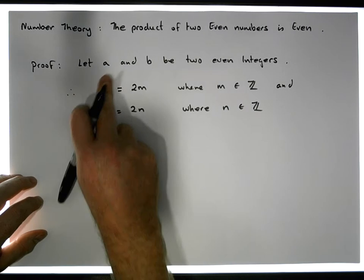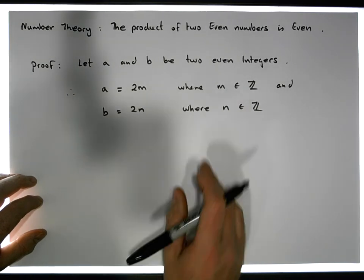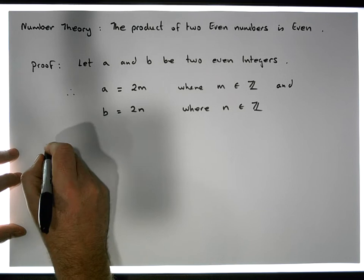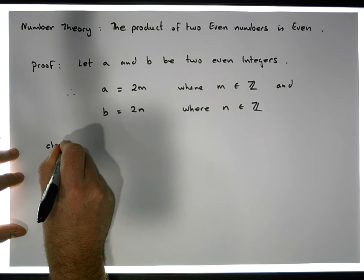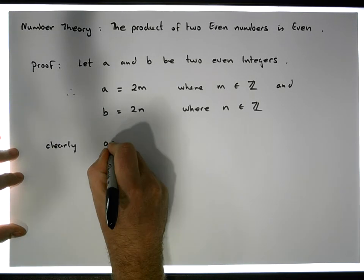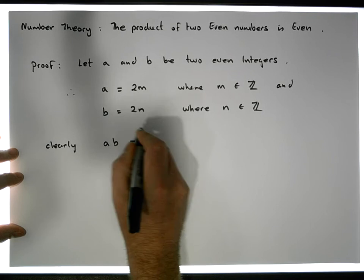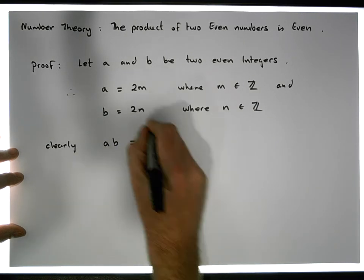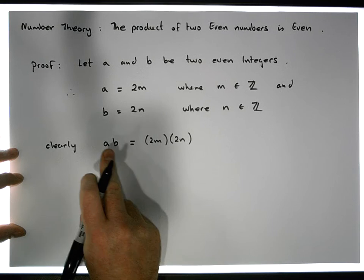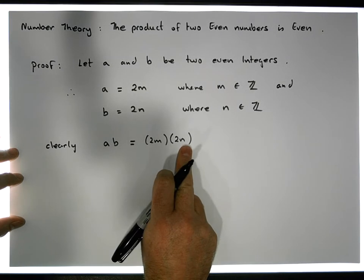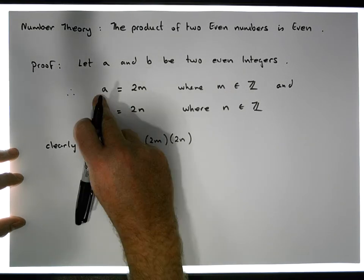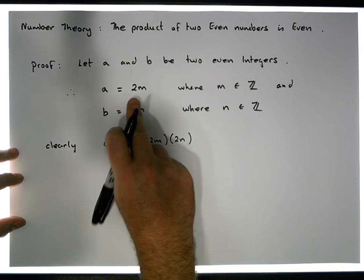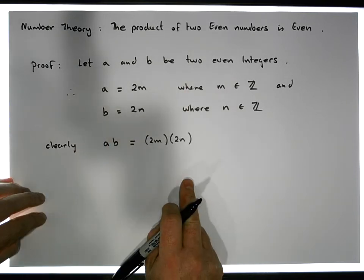So we now have our two even numbers. Let's see what the product of these two numbers look like. Clearly, we have that A times B must be equal to - well, A is 2M times B, which is 2N. So A times B must be equal to 2M times 2N, because this is the representation of A and the representation of B as even numbers.